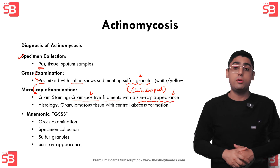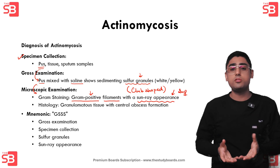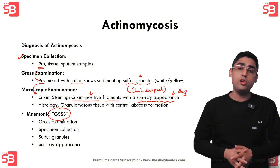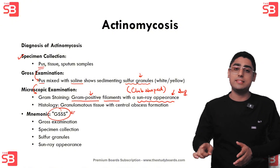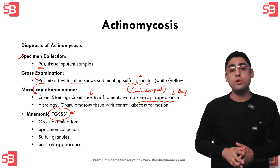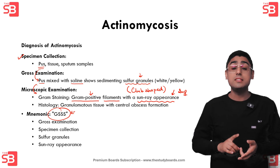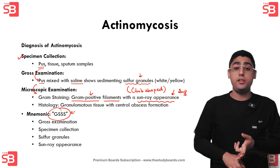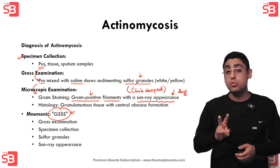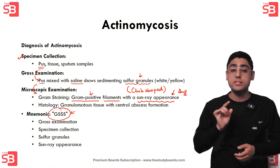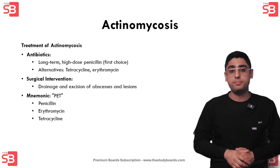The Gram staining creates a sunray appearance — this term is important and may be asked in your examination. To remember the entire diagnosis process, use the mnemonic G-Triple-S: Gross examination, Specimen collection, Sulfur granules, and Sunray appearance. The last two — sulfur granules and sunray appearance — are the most important to recall.